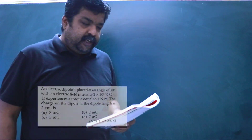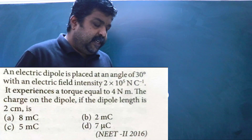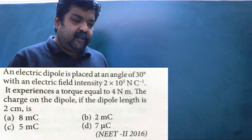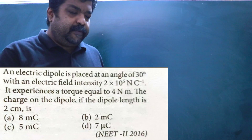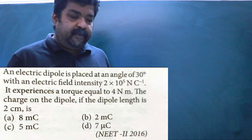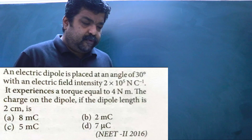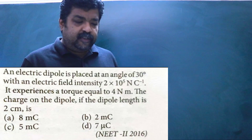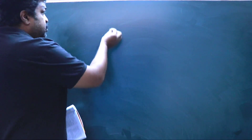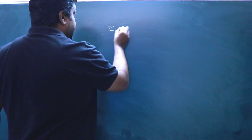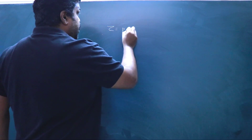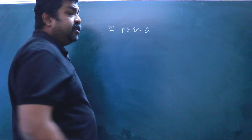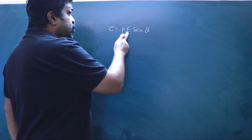The next question is from NEET 2016. An electric dipole is placed at an angle of 30° with the electric field intensity of 2 × 10⁵ N/C. It experiences a torque equal to 4 Nm. The charge of the dipole is to be found, given that the dipole length is 2 cm.